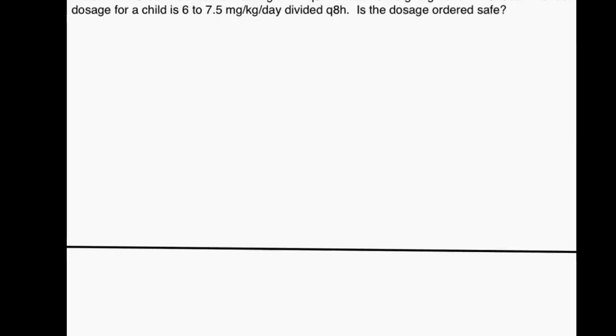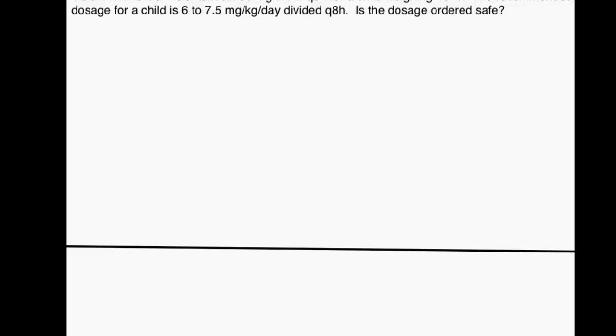Let's do one more example following a similar procedure: take a dosage problem, make sure the recommended units match the units of our order, then draw a conclusion. We're told a patient needs dimenhydrinate, 50 milligrams every 8 hours, and this child weighs 40 pounds. The recommended dosage for a child is 6 to 7.5 milligrams per kilogram per day, divided every 8 hours.